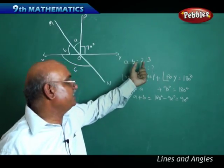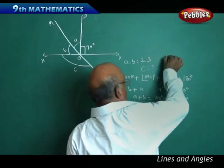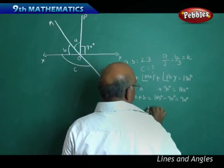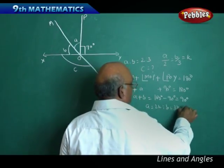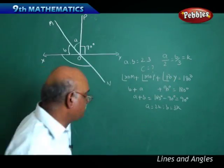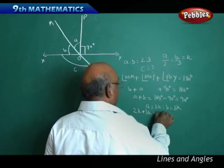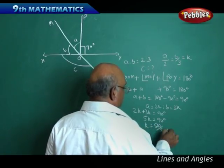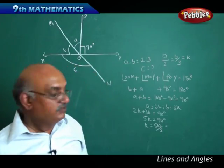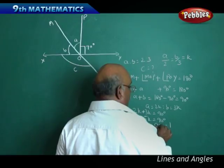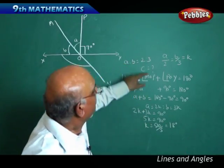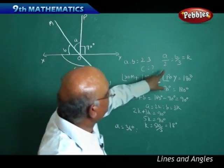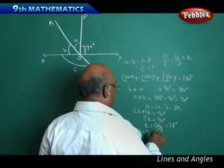The ratio A to B equals 2 to 3, so A/2 = B/3 = K. Then A equals 2K and B equals 3K. Substituting: 2K plus 3K equals 90, so 5K equals 90, K equals 18. Therefore A equals 36 degrees and B equals 54 degrees.